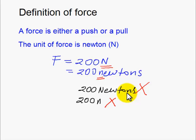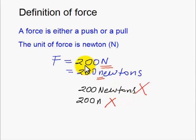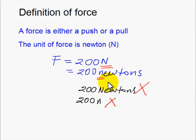It may appear to be a very simple thing, but it is these simple things which make the foundation of the subject. So let's remember: when we write the unit in Newtons and we want to abbreviate it with the letter N, then it must be uppercase N. When we want to write it in full, then we start with the small letter N.